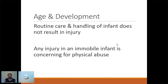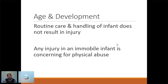Age and development: the younger a child is, the less likely they are to have an injury. Kids when they're really young and not moving aren't interacting with the world unless the world interacts with them. Routine care and handling of an infant should never result in an injury — there's nothing about an infant's skin that makes them more susceptible to bruising. So if you have a young child who is not yet crawling and they have any injury, no matter how small, that is concerning for physical abuse, because they should have zero injuries. When they become mobile — crawling, pulling to stand, cruising — then the concerning locations come into play.